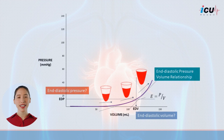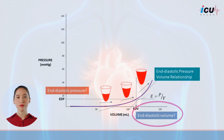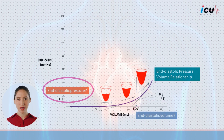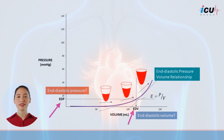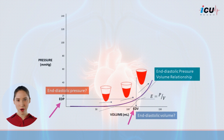Now, at the end of diastole, what is the indicator of preload? Is it the end-diastolic volume or the end-diastolic pressure? While both volume and pressure are critical factors, relying solely on pressure or volume does not provide a complete picture. Pressure can vary significantly with changes in ventricular compliance, while volume alone does not account for the actual stress experienced by the ventricular wall.